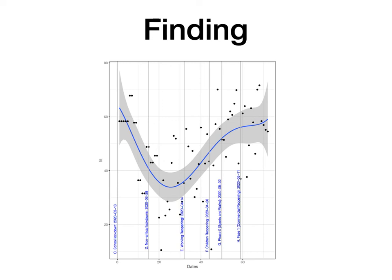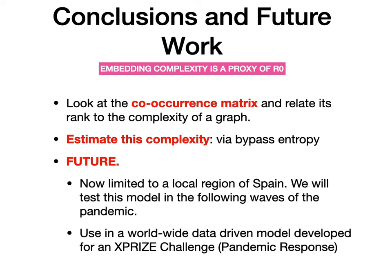In conclusion, what we have done in this paper is to use the complexity of the embedding as a proxy of R0. To do that, we look at the co-occurrence matrix, relate the expected co-occurrence matrix rank to the complexity of the graph, and we estimate this complexity not via rank but via bypass entropy.